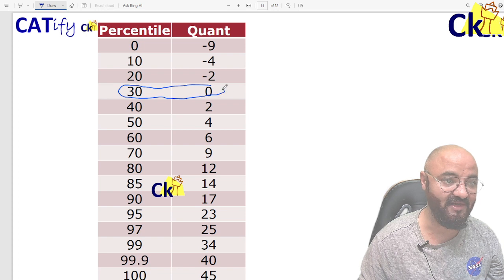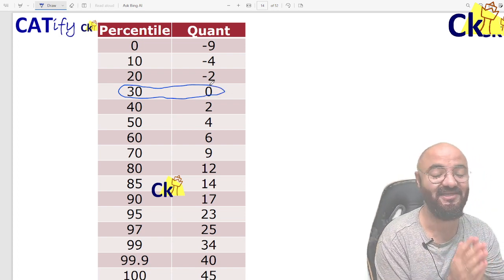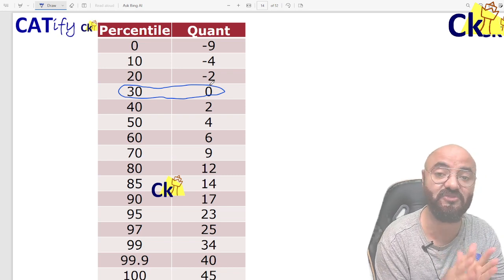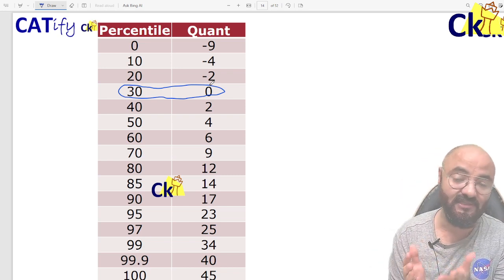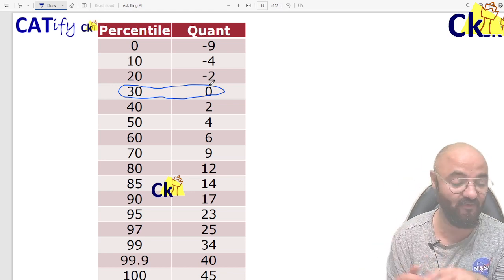Thirty percentile is zero marks. Last year CAT was given by almost two lakh twenty two thousand students, so thirty percent out of that is approximately sixty six thousand six hundred, round off sixty seven thousand.